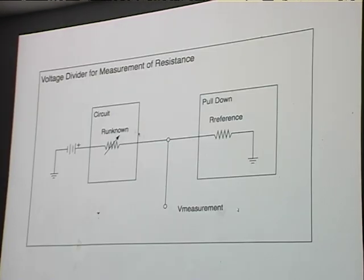It turns out that you can't measure a resistance directly. You have to measure the voltage that results from a ratio of that unknown resistance to another known resistance. And that circuit is called the pull-up or the pull-down.